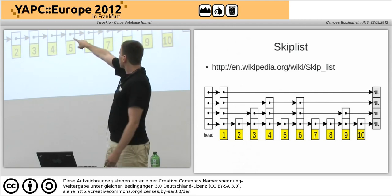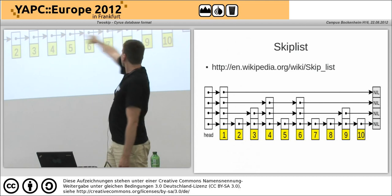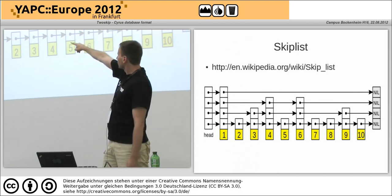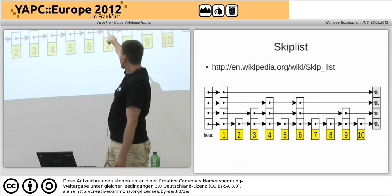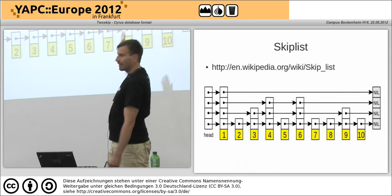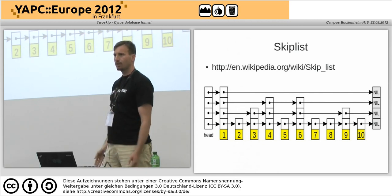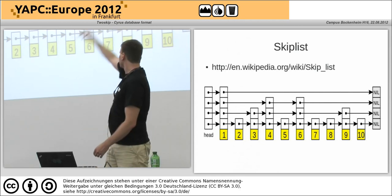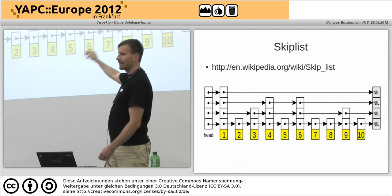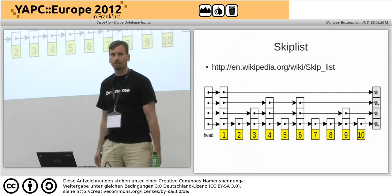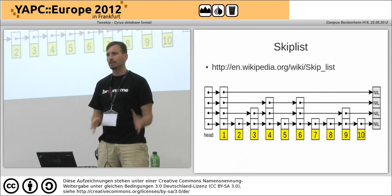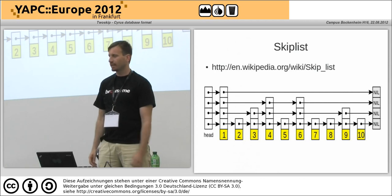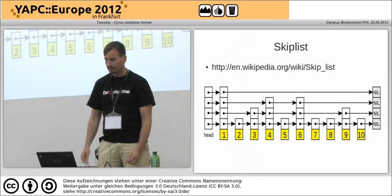You look at the first top one, discover there's nothing else, look at the next one, skip along until you get either a key that's after what you're looking for or the end of the list, and then you track down until you eventually get to the bottom list and find where you're looking for.